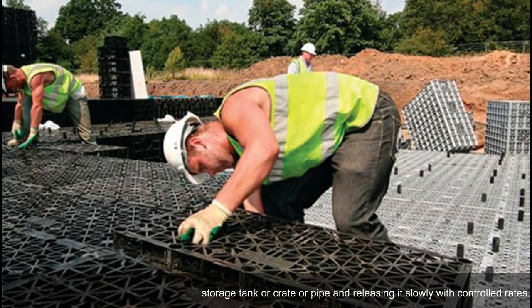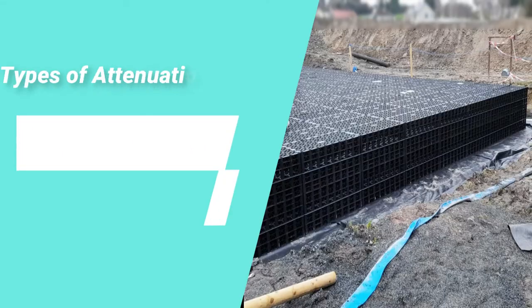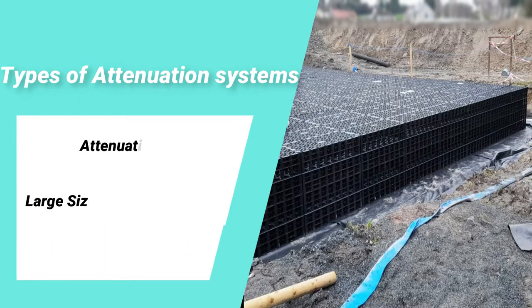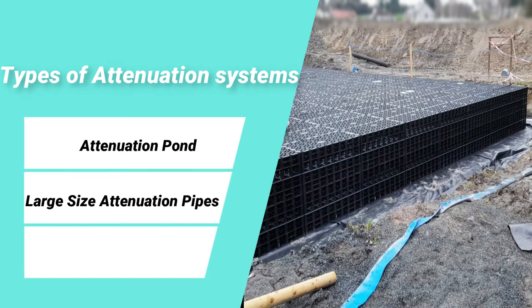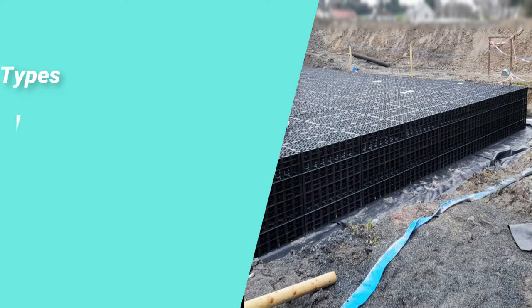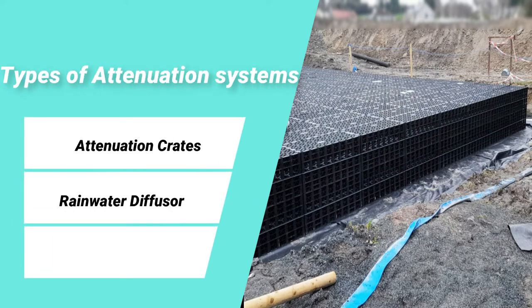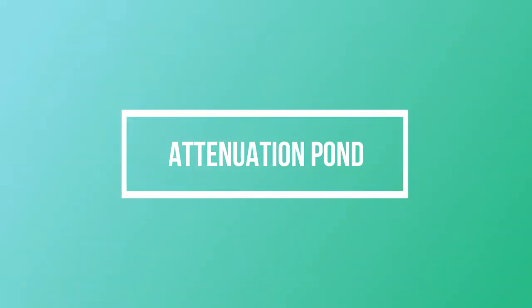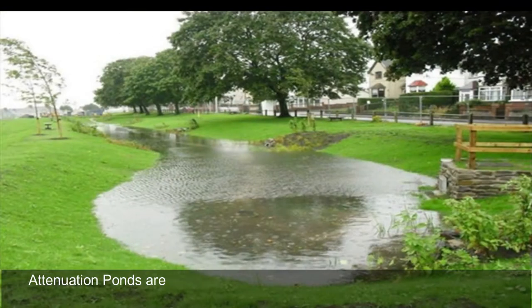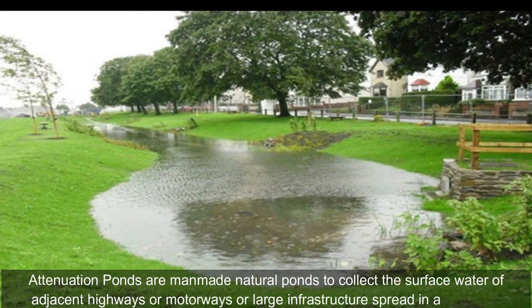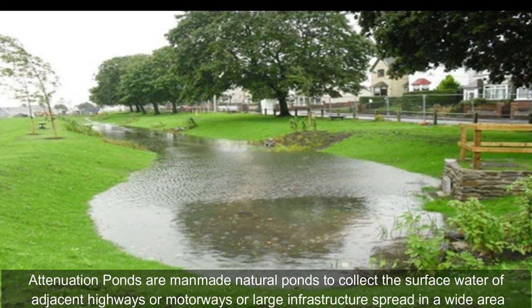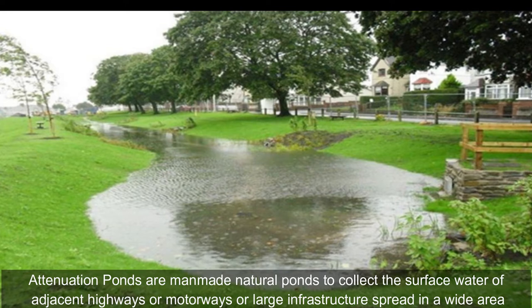Surface water attenuation simply means collecting the surface water in a storage tank, crate, or pipe and releasing it slowly with controlled rates. Following are the key types of attenuation systems: attenuation pond, large size attenuation pipes, attenuation crates, and rainwater diffuser.